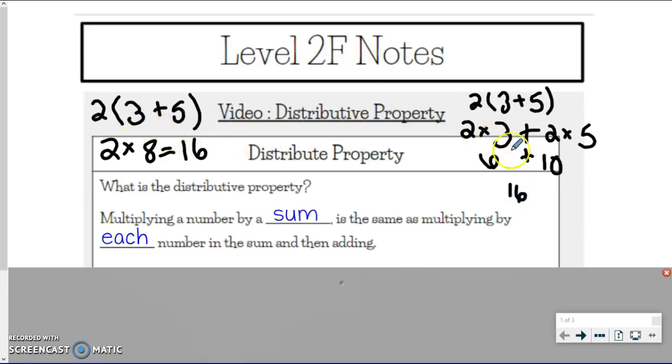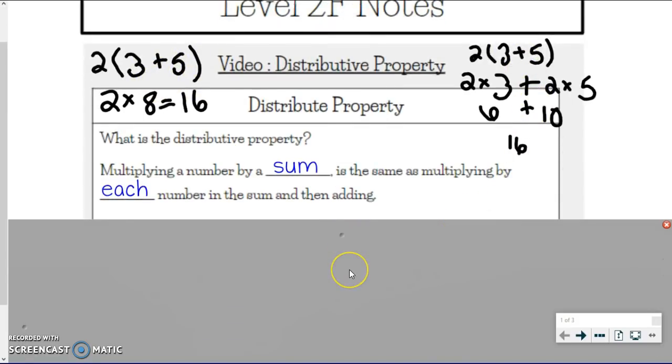So see, no matter which way I did it, whether I added, so I got the sum and then multiplied, or if I multiply by each number in that sum and then add them, I still got the same thing. That's what the distributive property says, is that both of these things are exactly the same. It's just two different ways to solve the problem.